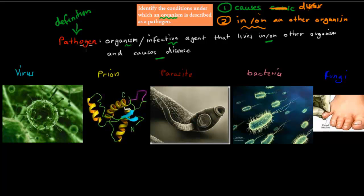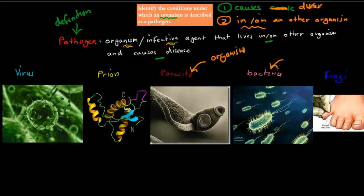Why does the actual definition of pathogen have both the word 'organism' and 'infective agent' in it? Remember, organism means any living thing. A parasite — mosquitoes, tapeworms, ticks — these are most definitely living, so we can call a parasite an organism. Bacteria can replicate and do lots of things by themselves, so we consider bacteria to be organisms as well. And a fungus — it can reproduce, survive by itself, and feed — so a fungus is also an organism.